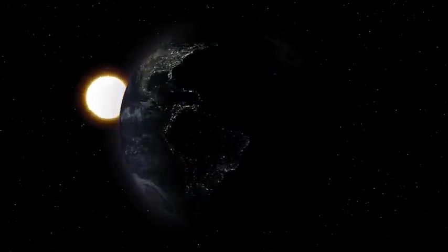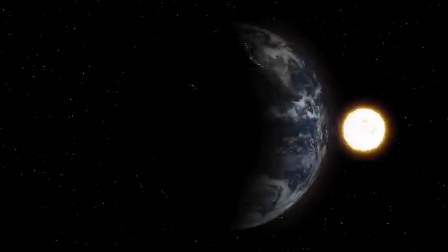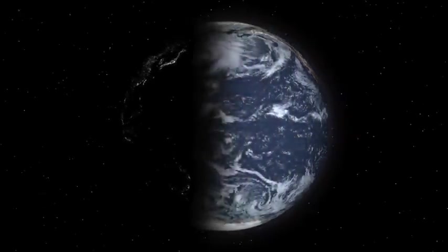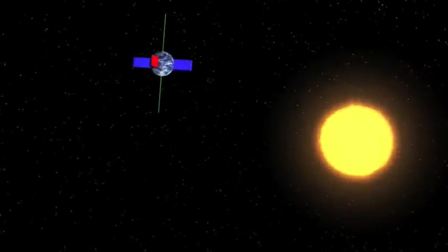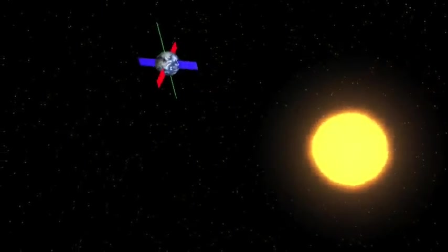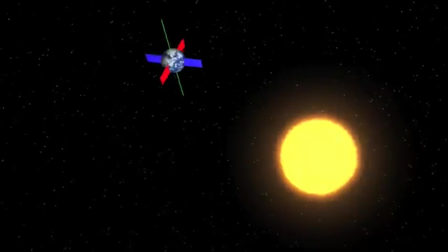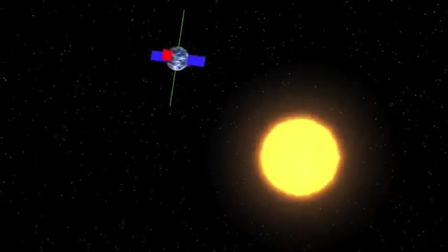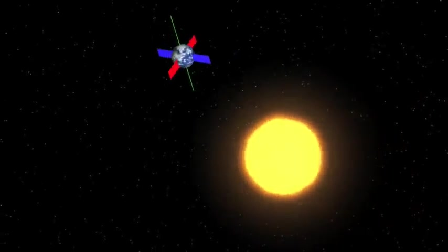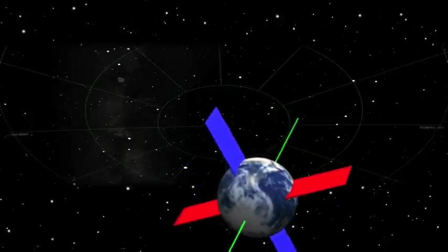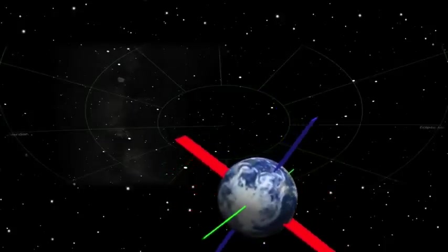The length of a year on Earth is affected by several gradual and cyclical changes in its orbit and its tilt. First, there is the precession of the Earth's axis. Over a period of about 26,000 years, the Earth's axis traces out a circle in the sky. One result of this is that the North Star changes over time.